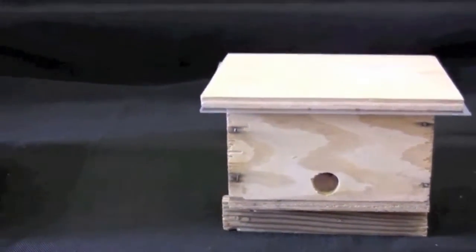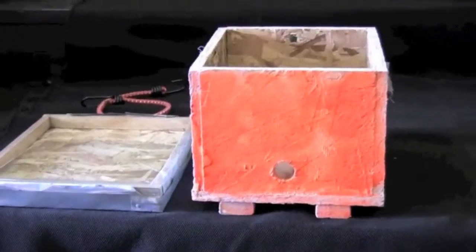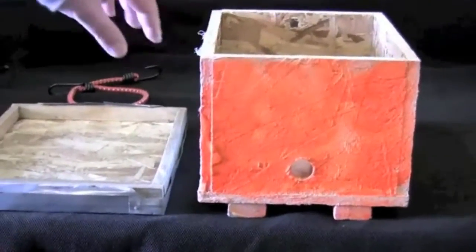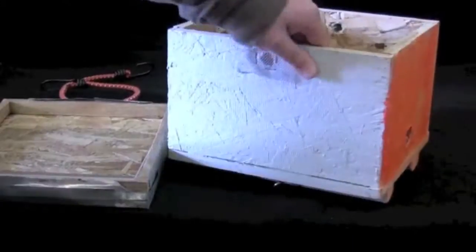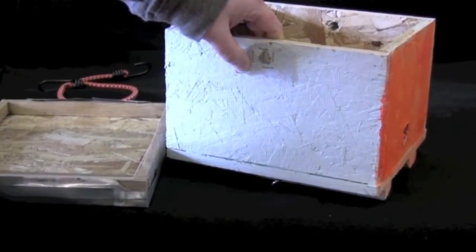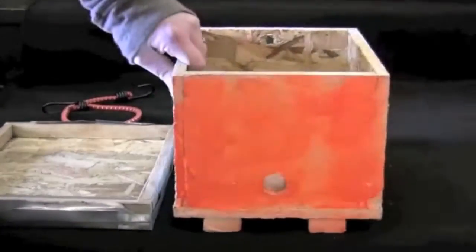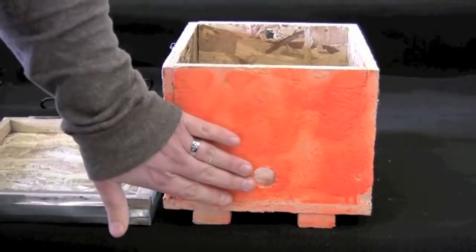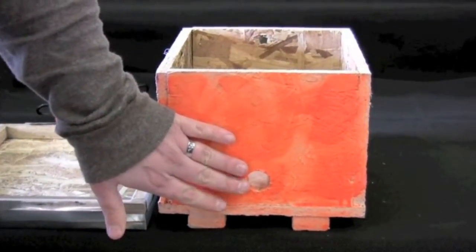Now, as the colony develops and increases in size, you may need to move your bees to a larger size container. Again, I recommend using a wood container, and similar to before, has ventilation holes in the side that are covered in a wire mesh, and also a hole in the center so that bees can leave the nest and forage in the landscape.